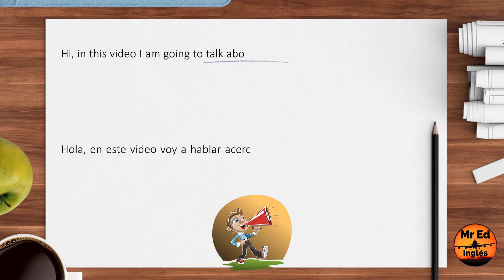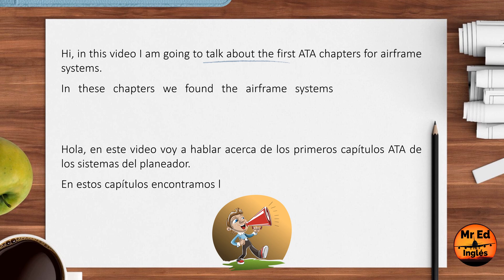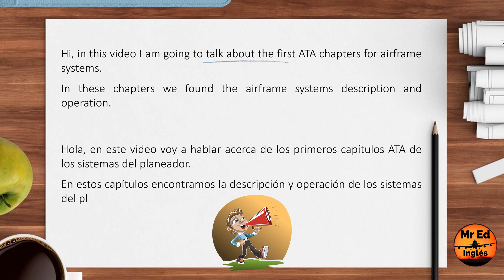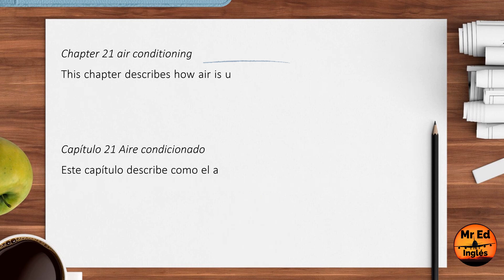Hi! In this video, I'm going to talk about the first 88 chapters for airframe systems. In these chapters, we found the airframe systems description and operation. Chapter 21, Air Conditioning.